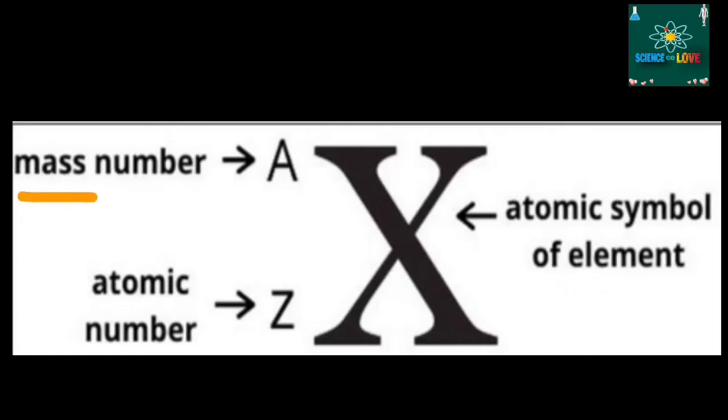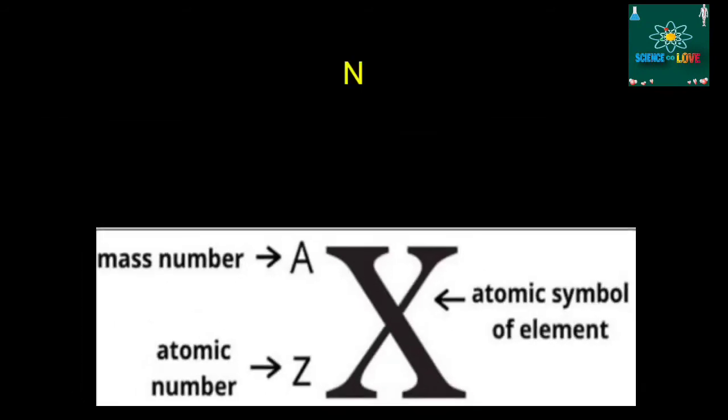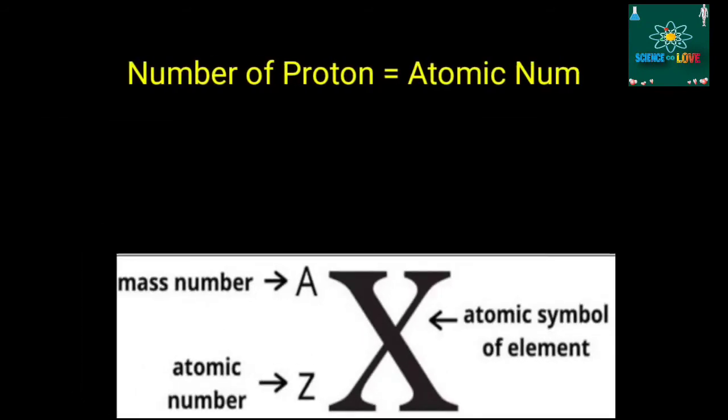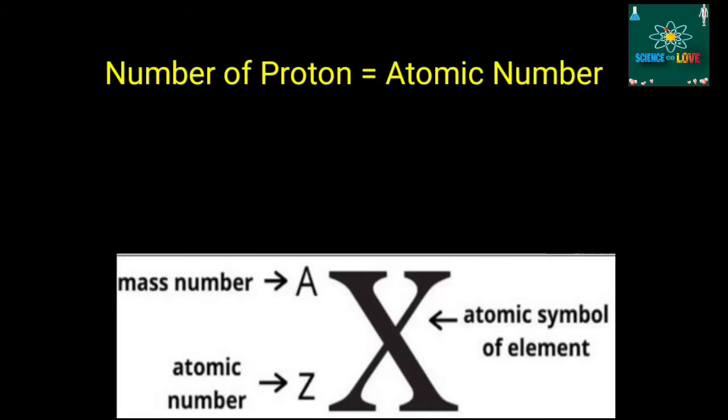The mass number, A, is written on the upper portion beside the symbol X, while the atomic number, Z, is written below the mass number. The number of protons in an atom is called the atomic number of an element.